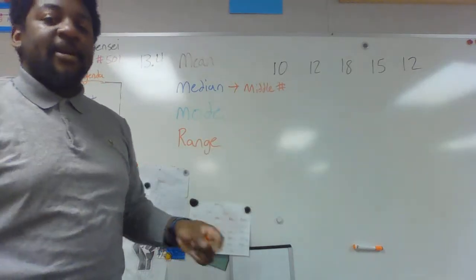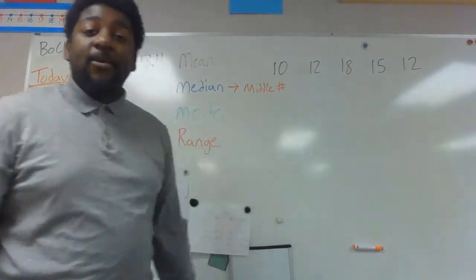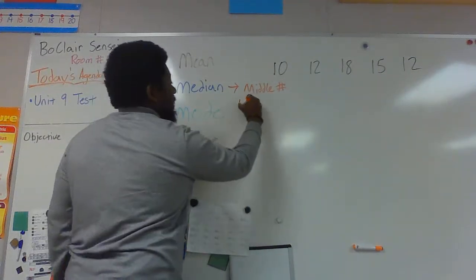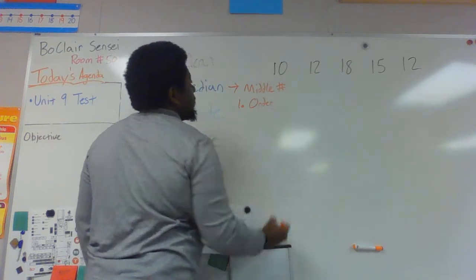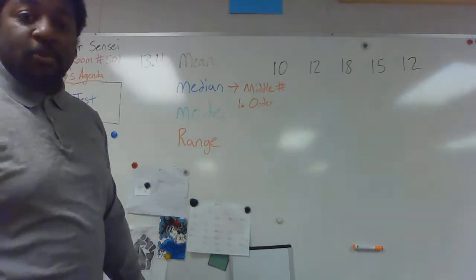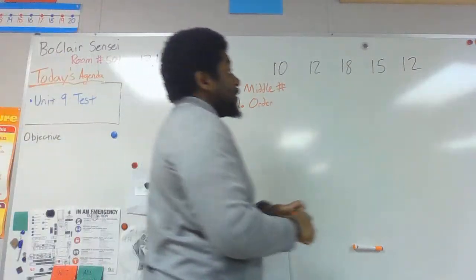Tomorrow we'll talk about when you have an even amount of numbers, and you have to do some extra math to find the middle. But right now, to find the middle, the first thing you need to do is put them in order. So I like to put my numbers in order from least to greatest. It just makes it easier for me to see them and count them, or whatever I'm trying to do with them.